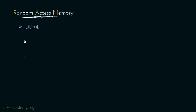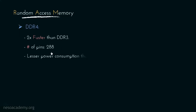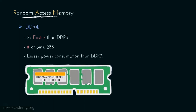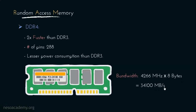Finally, the next type is DDR4. These are basically twice as fast as DDR3, having a total of 288 pins, and they also consume lesser power than DDR3. Consider this DDR4 RAM stick — on the label it is mentioned that it has a speed of 4266 MHz. Hence the bandwidth is 4266 MHz multiplied by 8 bytes, that is 34100 Mbps, which is also mentioned in the label itself.